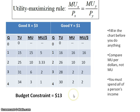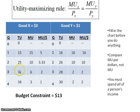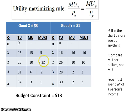Looking at this table, for good X the marginal utility of the first unit is 15, because total utility went from 0 to 15. The marginal utility of the second unit is 10, because it went from 15 to 25. For the third unit it is 6, because it went from 25 to 31. To find marginal utility per dollar, divide each marginal utility by the price of $3, giving us $5, $3.33, $2, and $1.